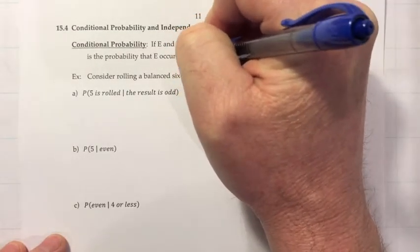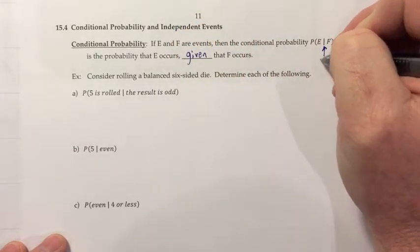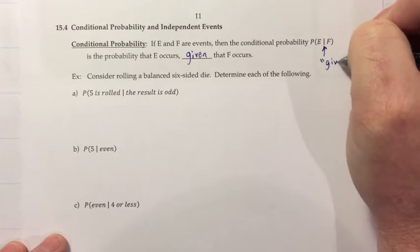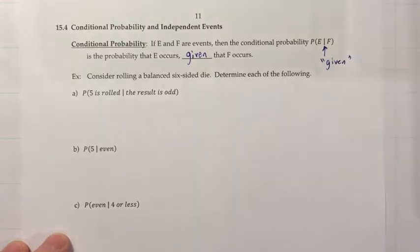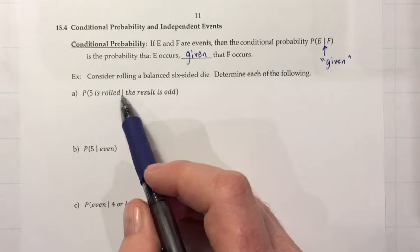I'm going to fill in the word 'given' here, but it's also worth mentioning that's how I translated that vertical line right there, as the word given. And it is a vertical line, it's not a slash like a fraction. So to try and understand what they're talking about there, let's look at an example. Consider rolling a balanced six-sided die and determine each of the following. Find the probability that a five is rolled, given that the result is odd.